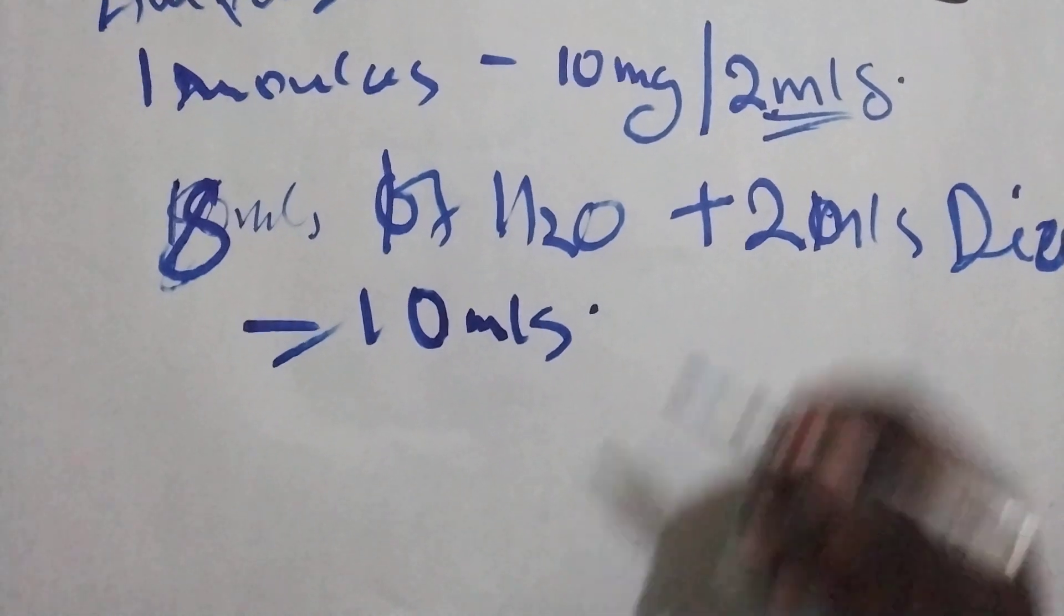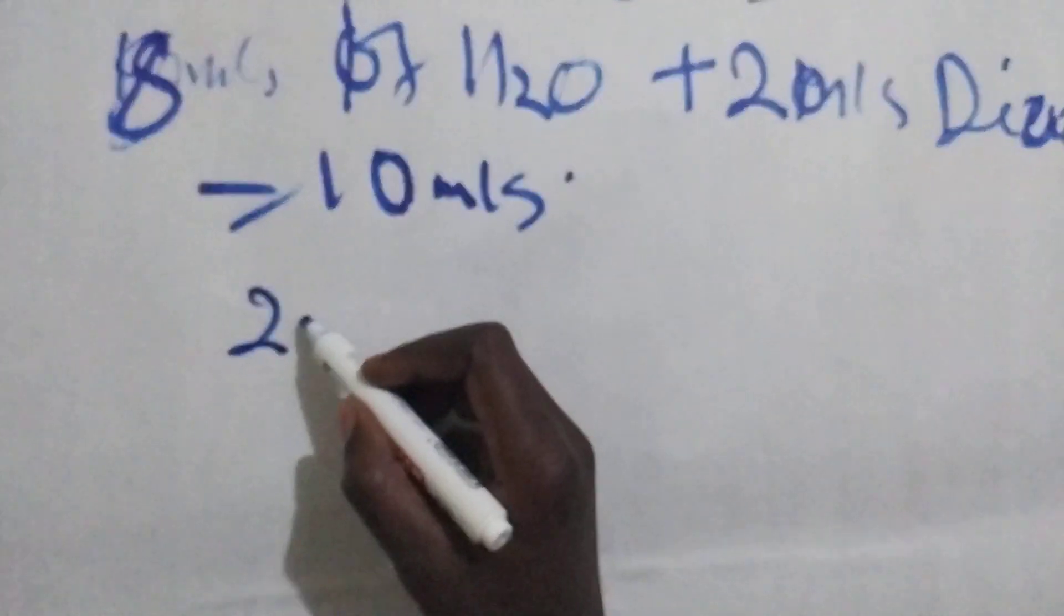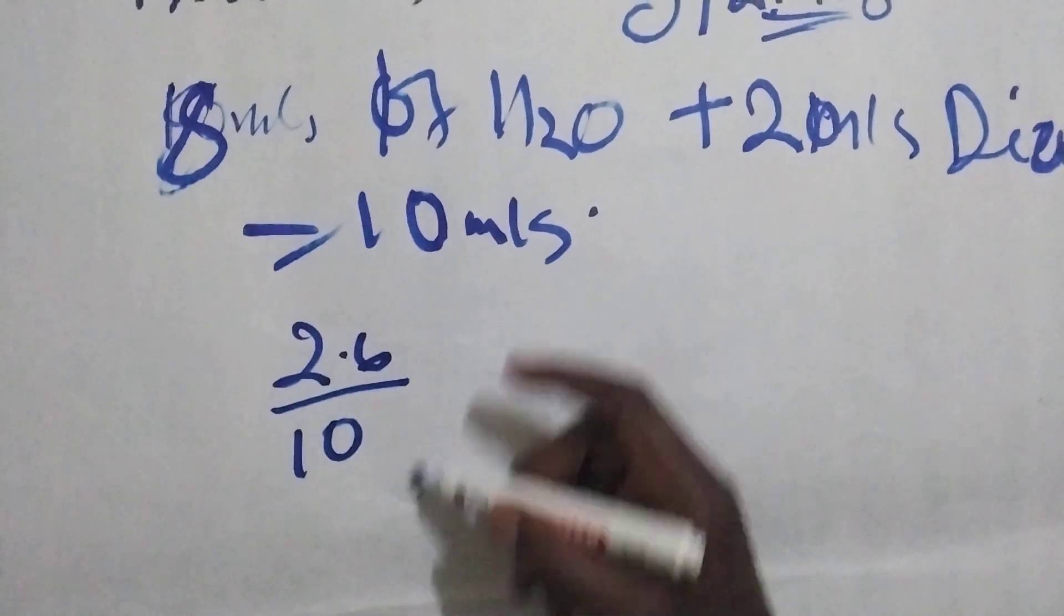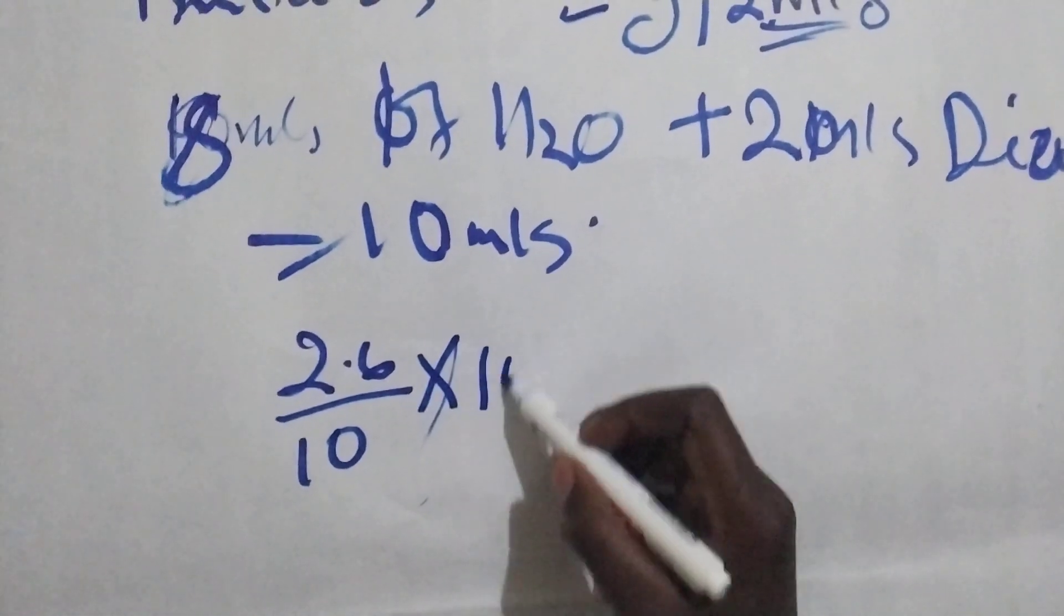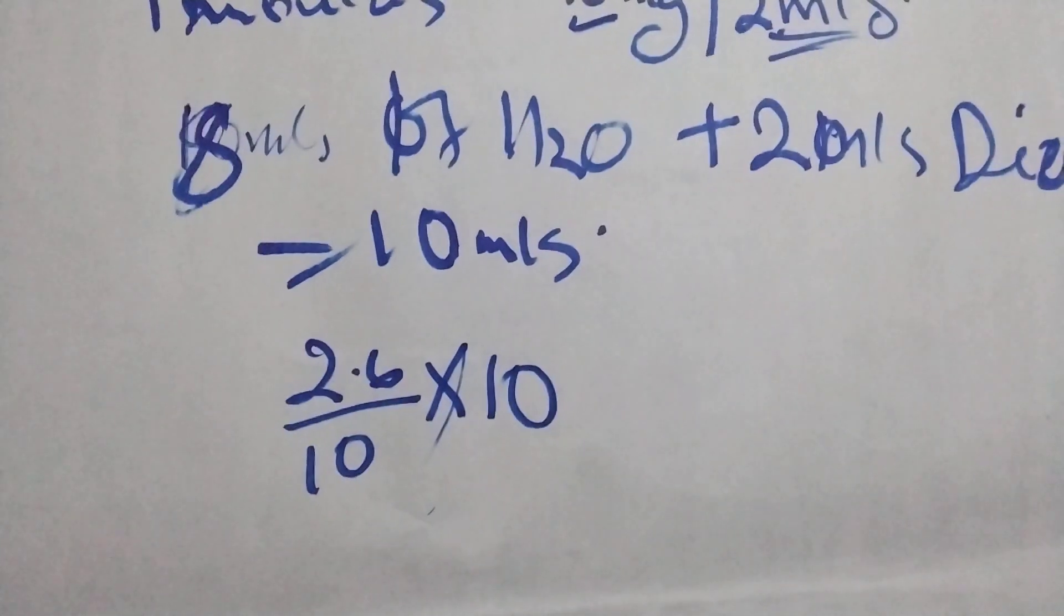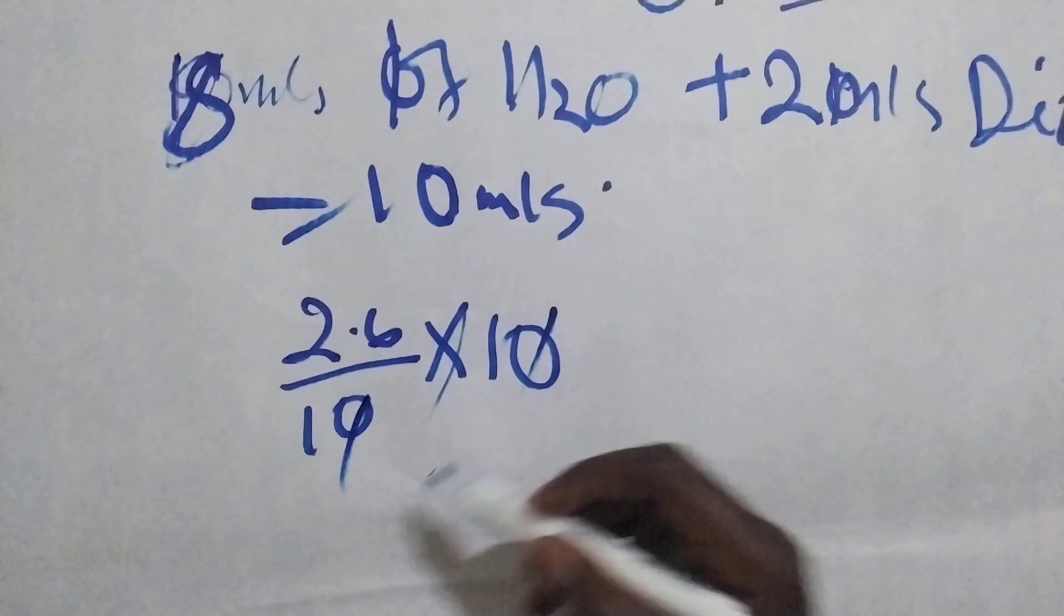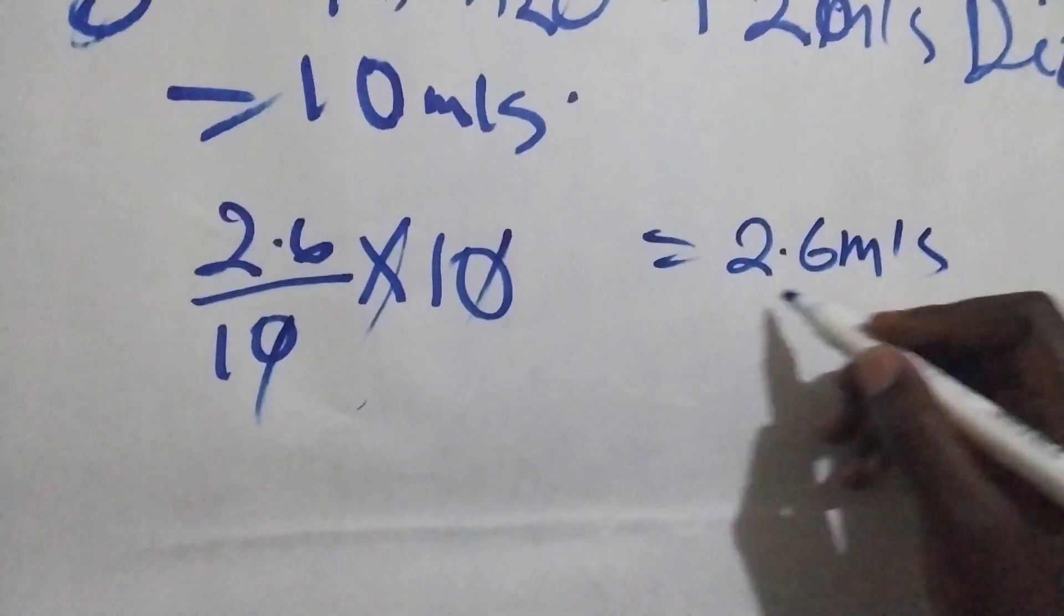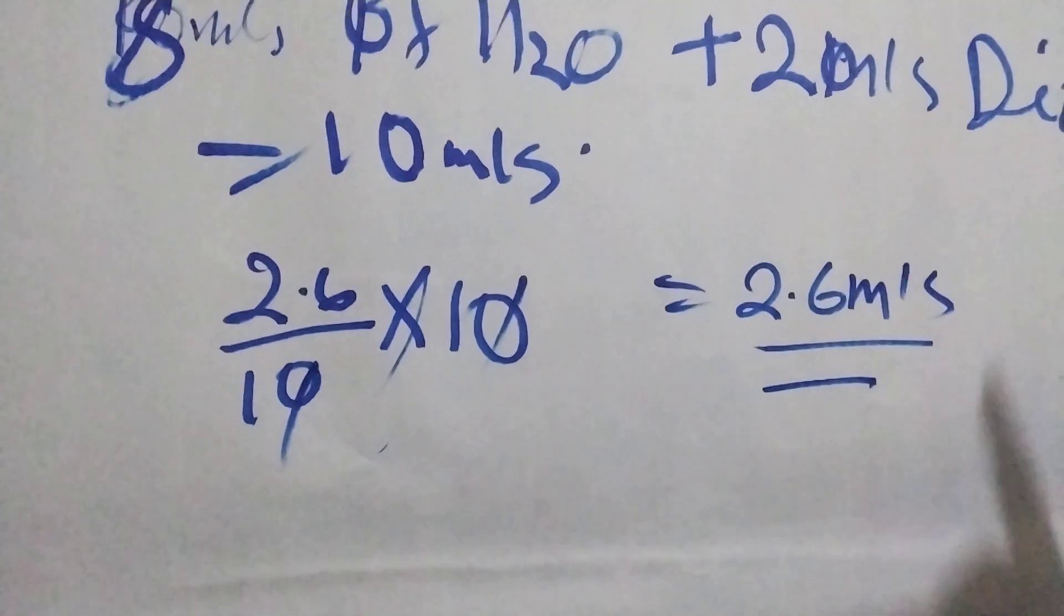So let's calculate this one. 2.6 divided by 10, that is our base. Then we are multiplying it by 10. What we are going to aspirate, we are going to aspirate 2.6 mils and we are going to give to the child.